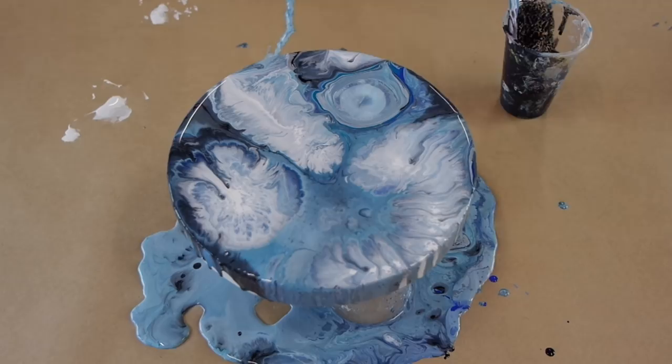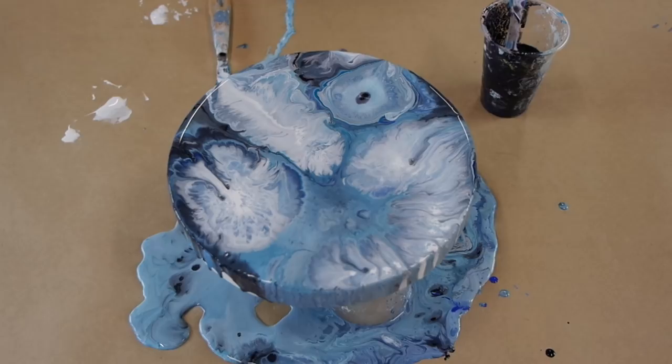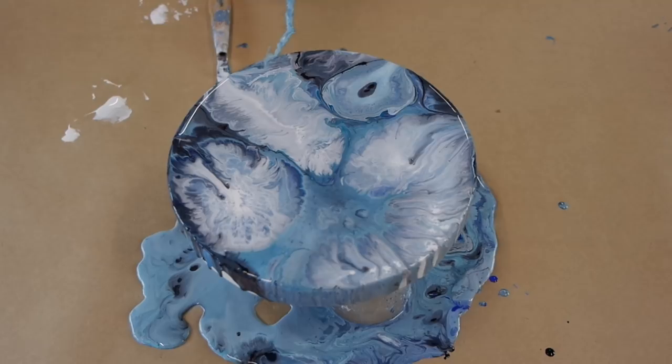Rubbing alcohol is a great product to use in your flow acrylic paintings because it creates really cool patterns, but it will evaporate once the painting dries, which won't leave any weird surface or any funny texture to your painting, unlike silicones, which if you overuse can sometimes leave an oily residue to your artwork.